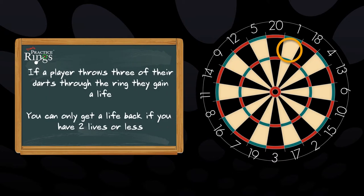If a player throws three of their darts through the ring, they will gain a life. However, you can only get a life back if you have two lives or less.